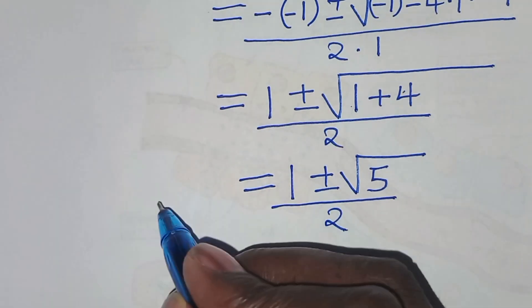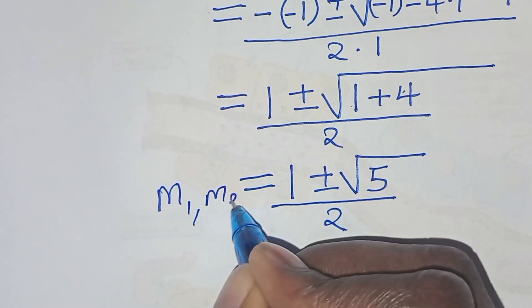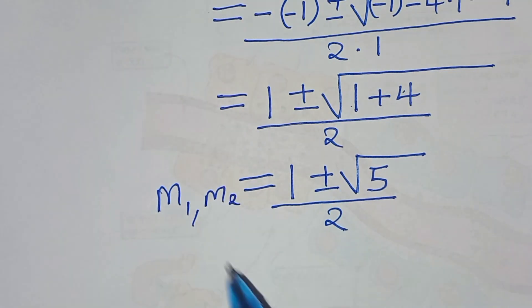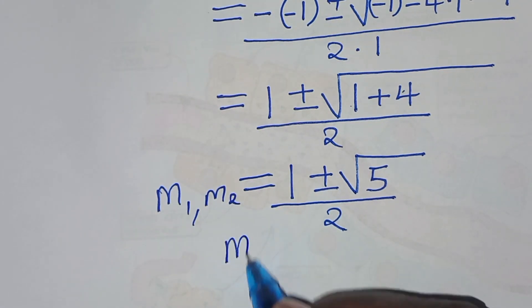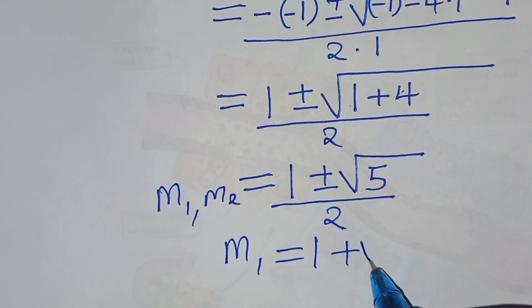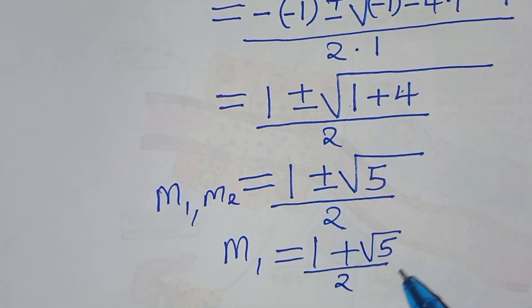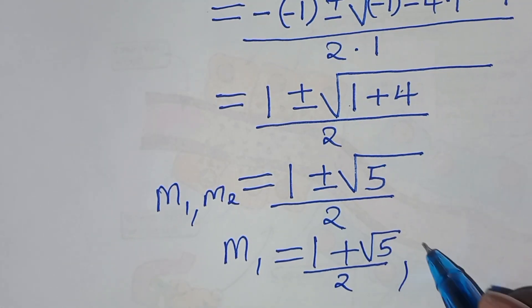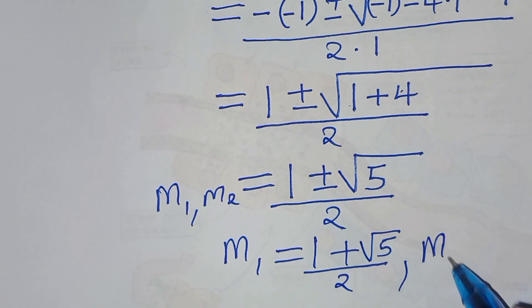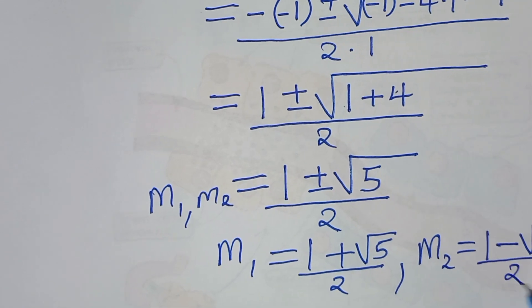So m1 equals (1 plus square root of 5) divided by 2, and m2 equals (1 minus square root of 5) divided by 2.